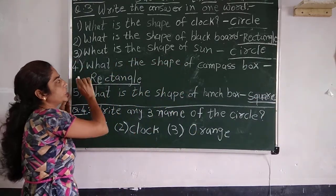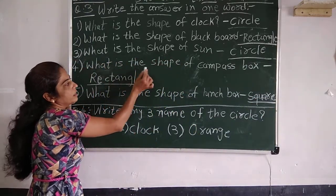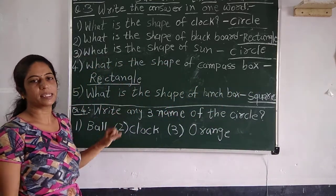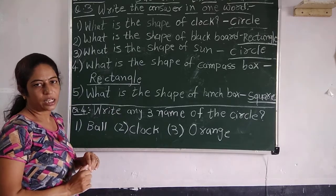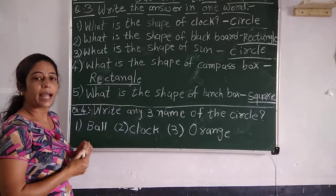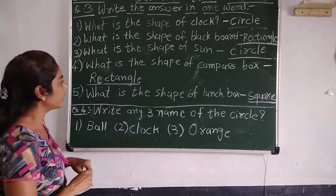The fourth question is what is the shape of compass box? When you can see the compass box, you can see the shape of this rectangle. The compass box is rectangle.